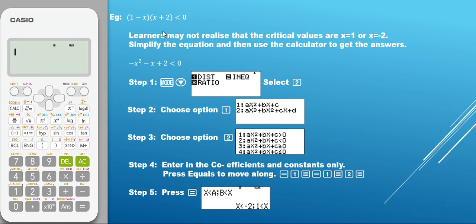Today we're going to be looking at inequalities on the FX991Z8 plus 2 calculator. The question we are dealing with: 1 minus x is our first bracket, x plus 2 is our second bracket, and these are going to be less than 0.